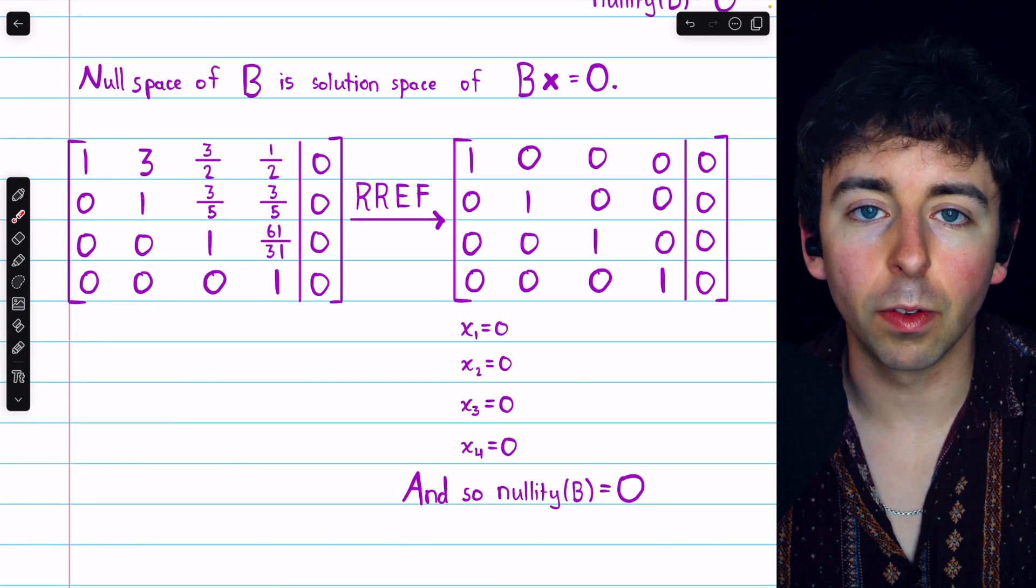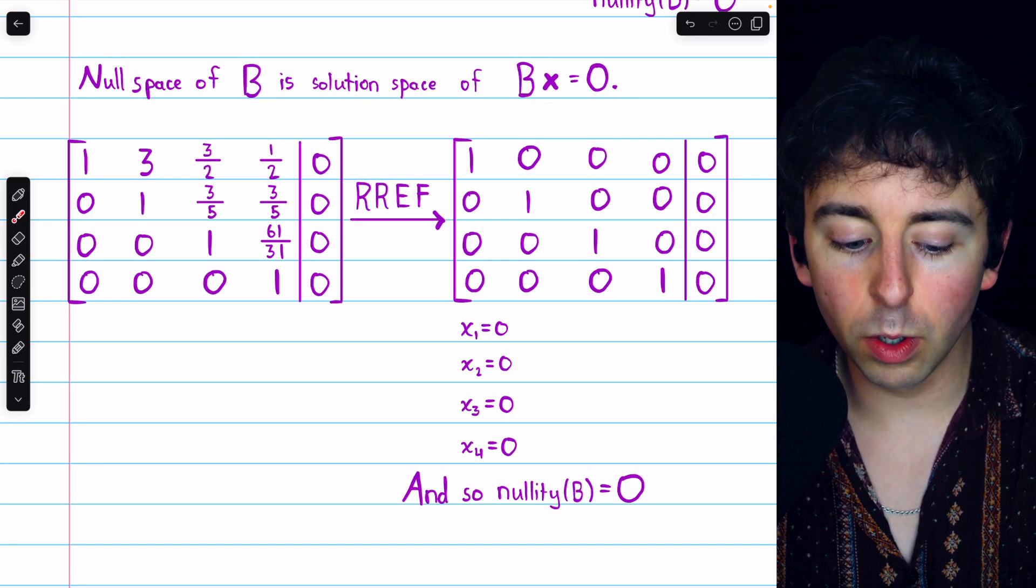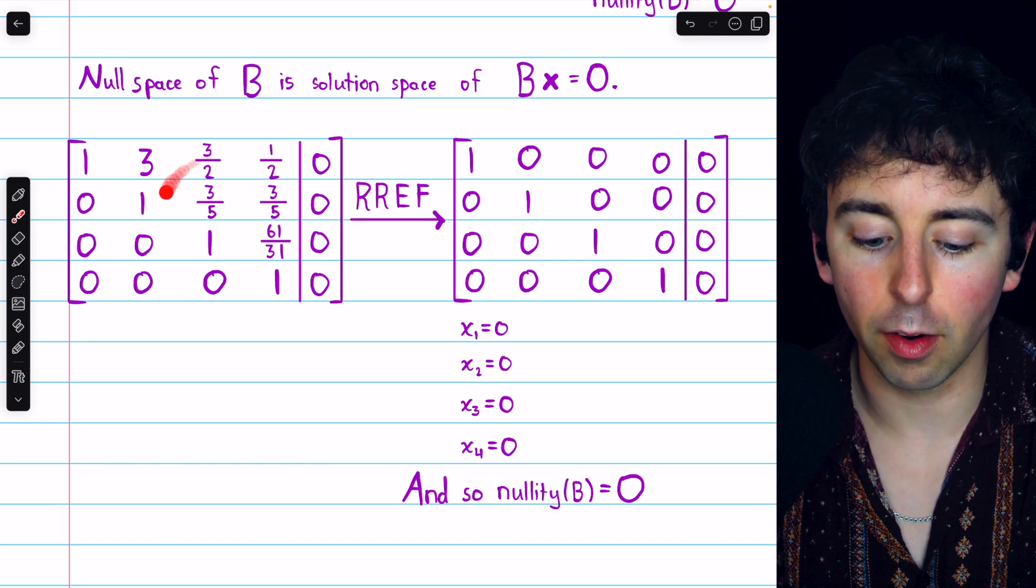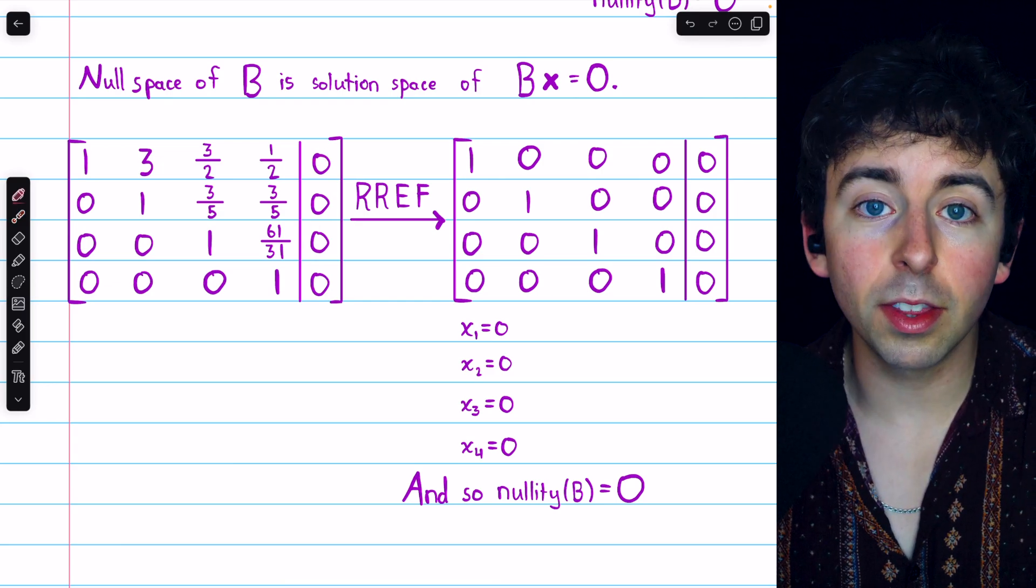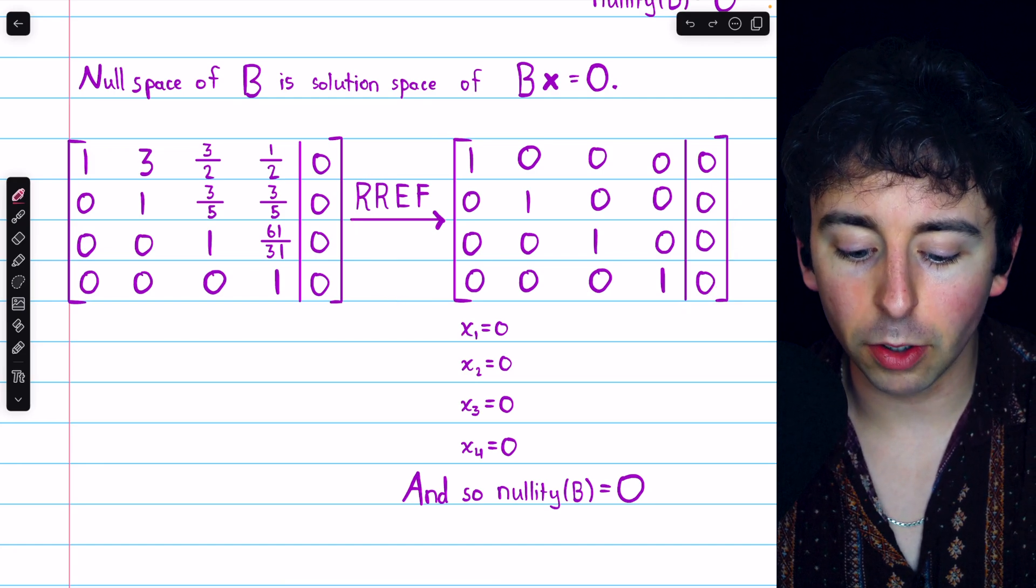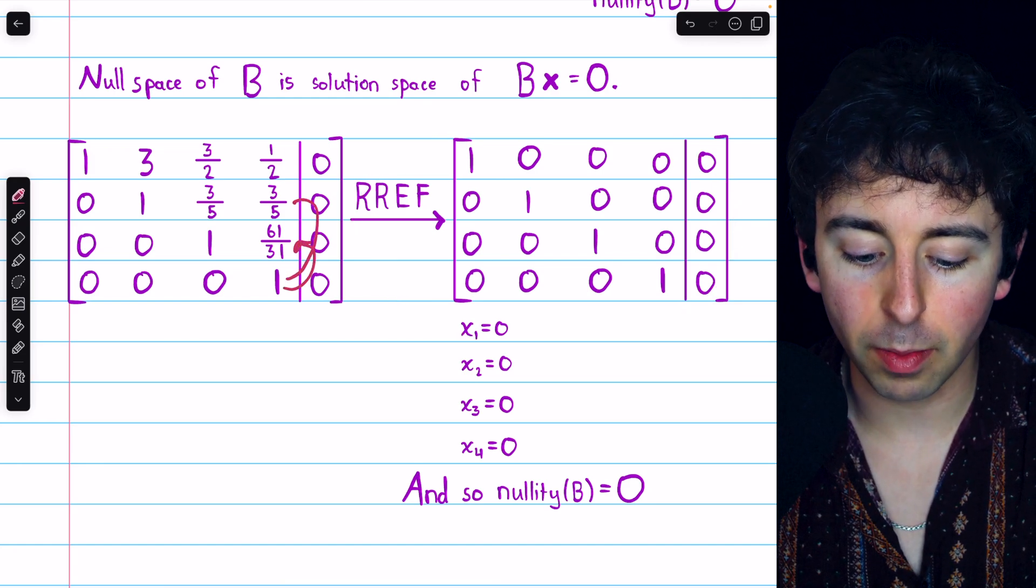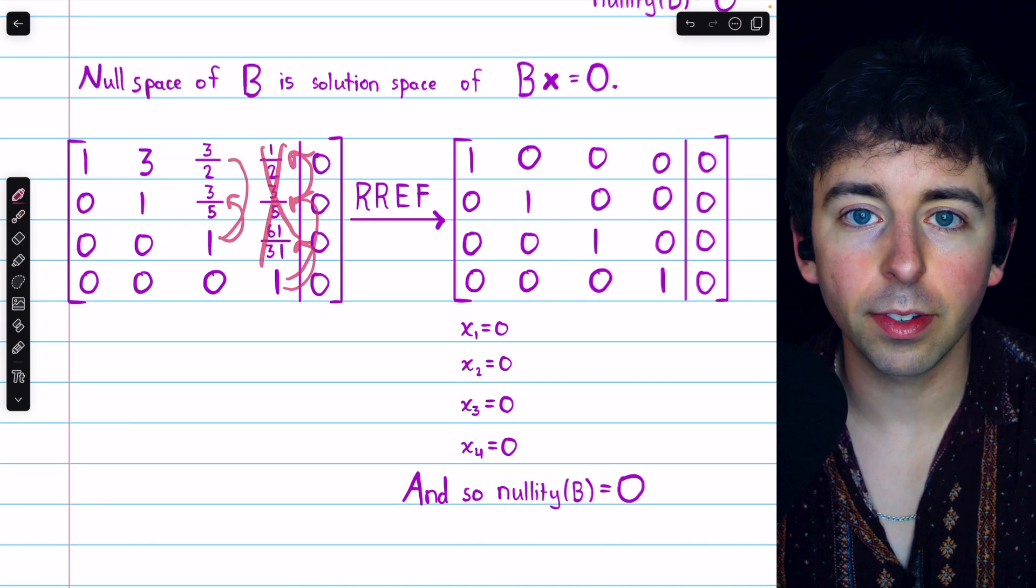We could also find the nullity the old-fashioned way. The augmented matrix for this homogeneous system would reduce to this row echelon form, same matrix we saw before, but with this column of zeros. We could then get it into this reduced row echelon form by subtracting multiples of the last row from the previous rows to get rid of those numbers, and so on for the other rows.